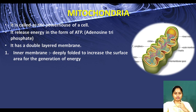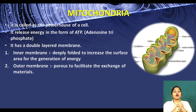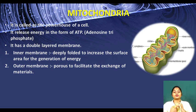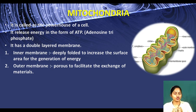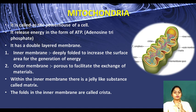The outer layer of mitochondria is porous, meaning it has small pores that help in the exchange of materials. Inside the inner membrane there is a jelly-like substance called the matrix. The folds in the inner membrane are called cristae. So to summarize: mitochondria is the powerhouse of the cell, releases energy as ATP, has a double layer — the inner layer is deeply folded to increase surface area, and the outer layer is porous for material exchange.